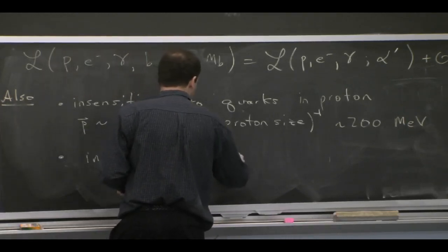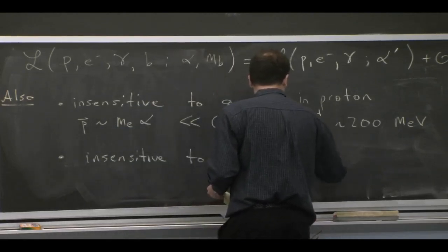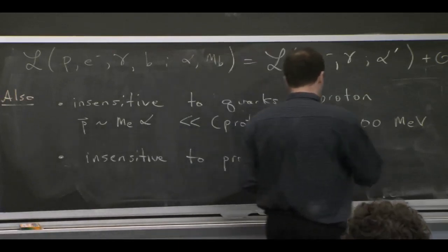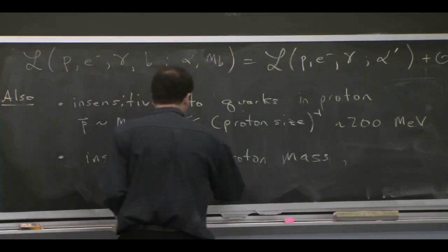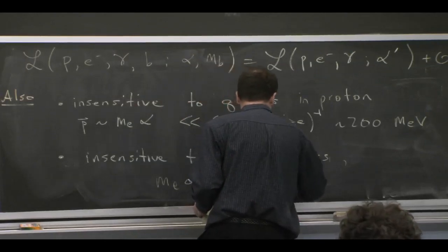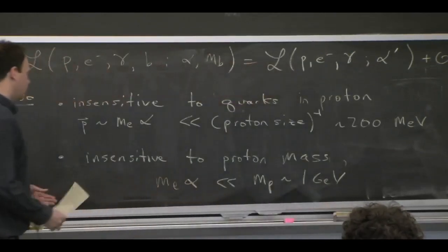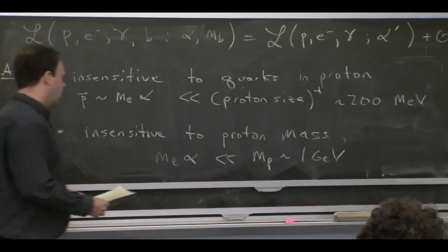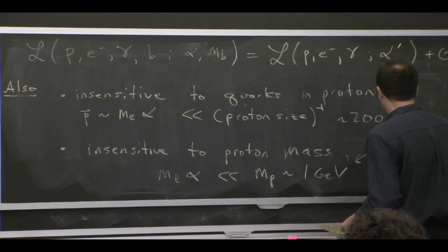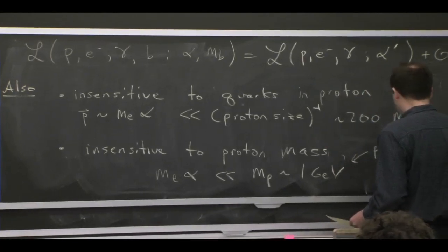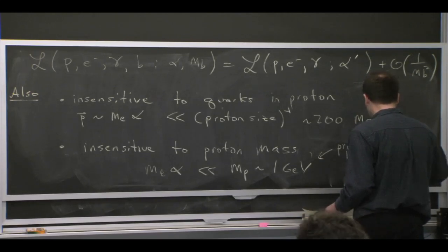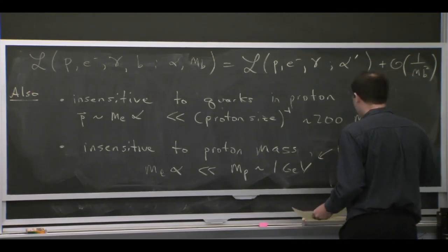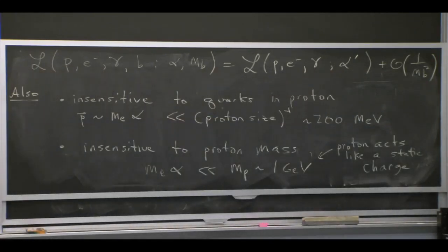It's also insensitive to the proton mass itself. So the proton we keep as an object, but the momentum transfer, Me alpha, is much less than the mass of the proton, which is in order of GeV. And so we expand in our treatment of the proton as well. Basically what this means is that the proton acts like a static charge. The proton mass wasn't showing up in our lowest order description of the energy here, it would show up in higher order corrections that we neglect.